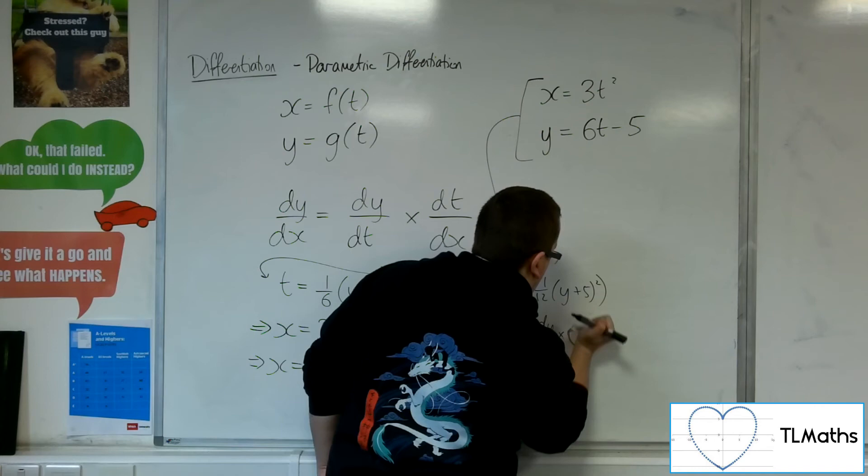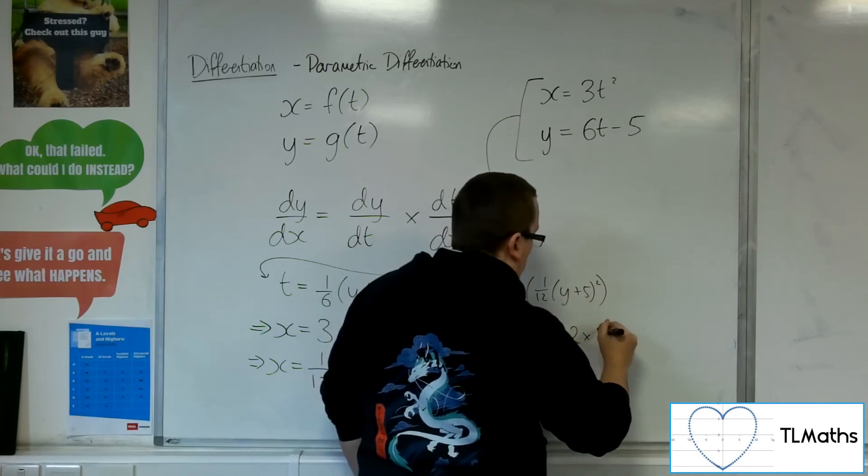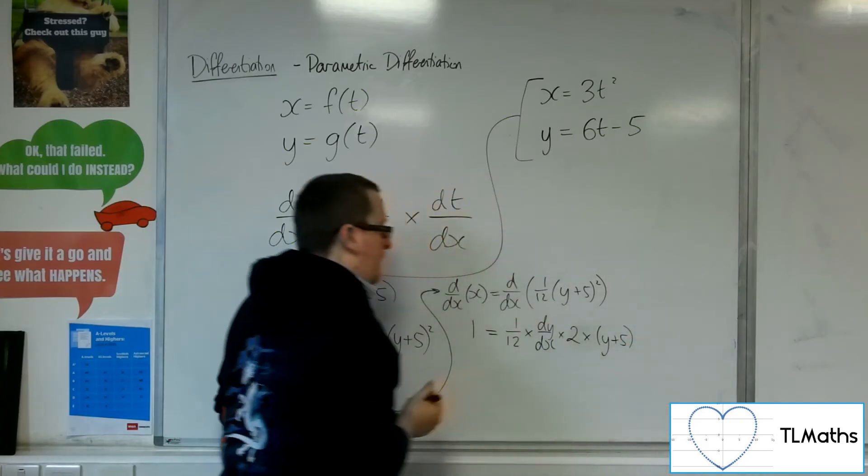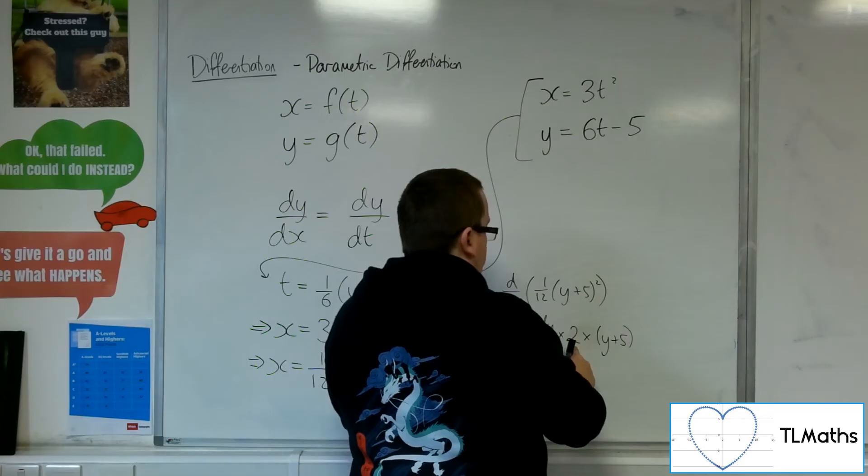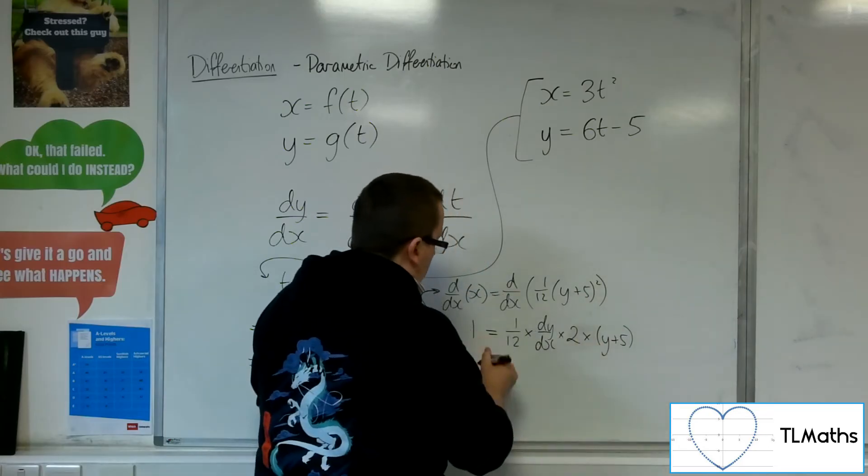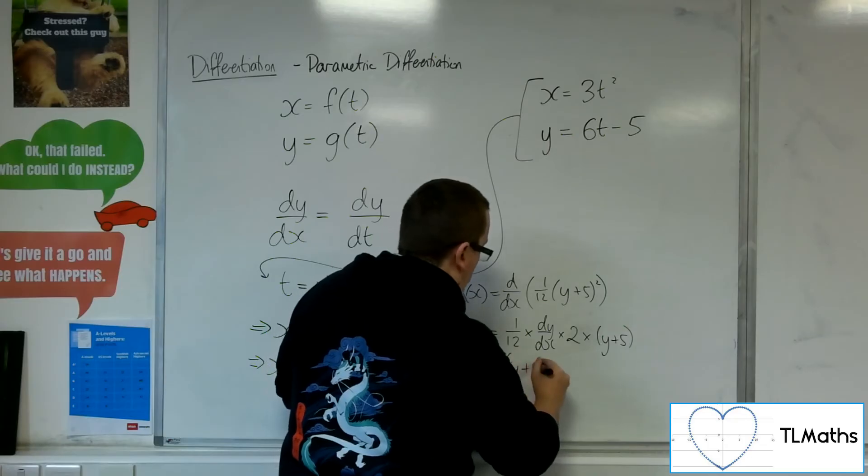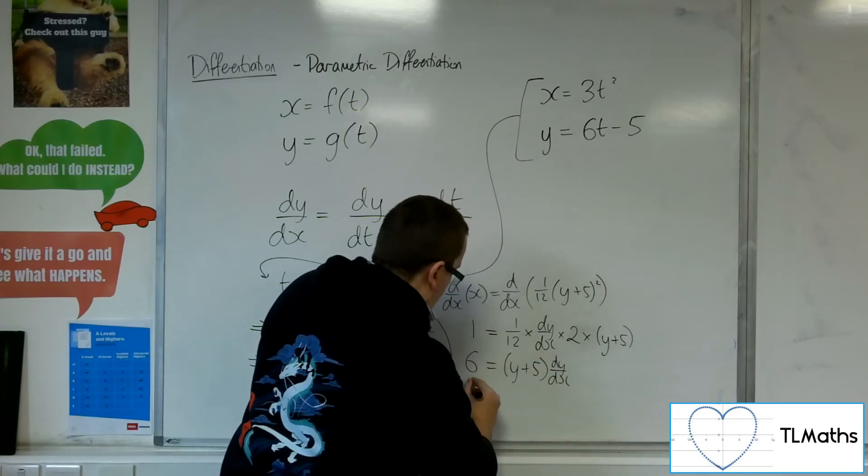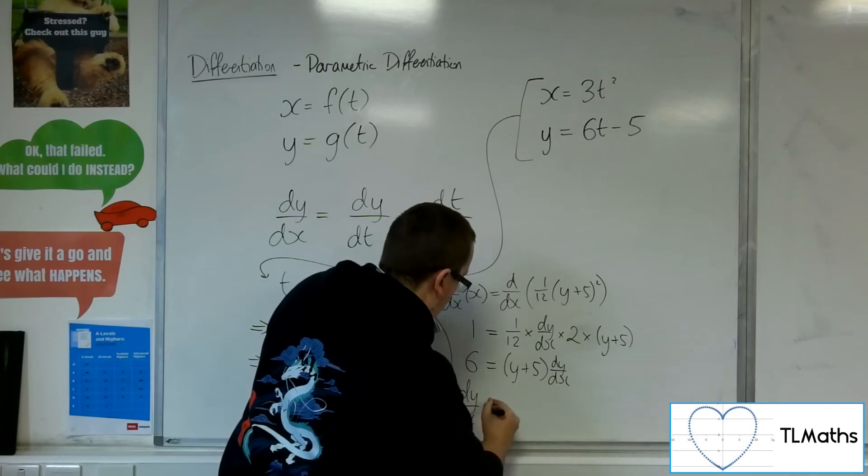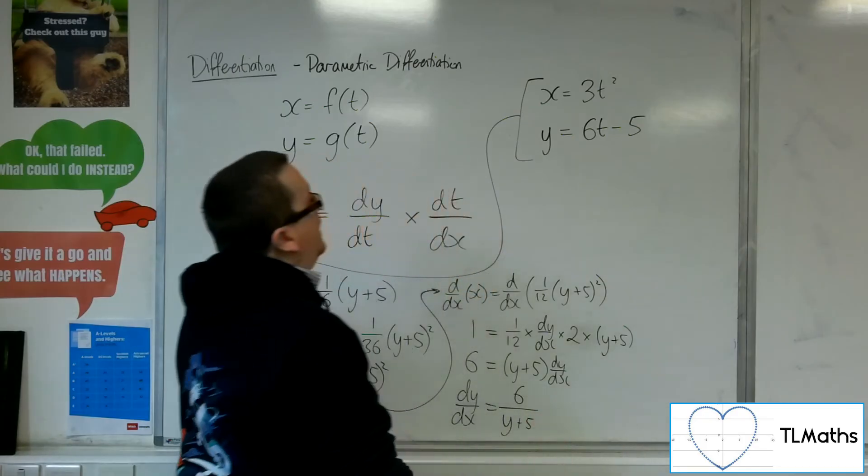Times by y plus 5. Oh, sorry. The 2 would also come down the front. Times y plus 5 to the 1. OK. So I've got 1 12th and times 2, which is 1 6th. Multiply both sides by 6. So we're going to get y plus 5 dy by dx. So dy by dx is 6 over y plus 5. OK.